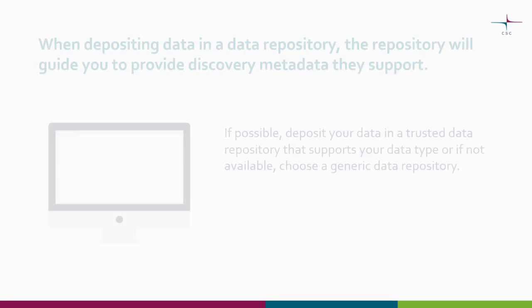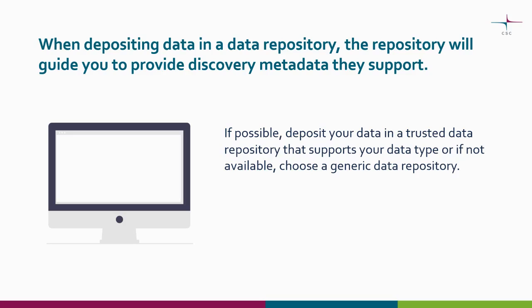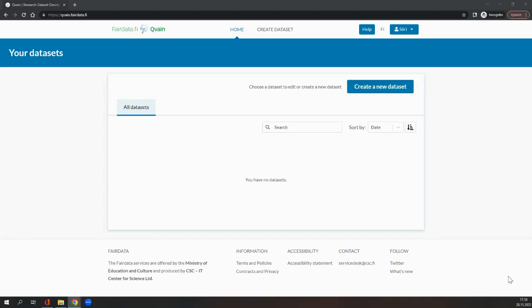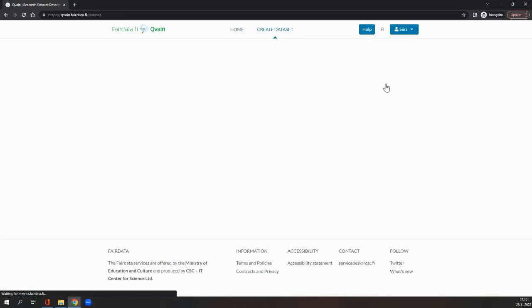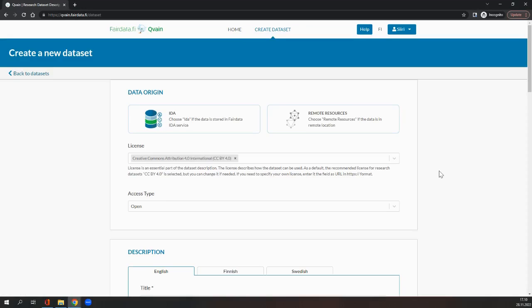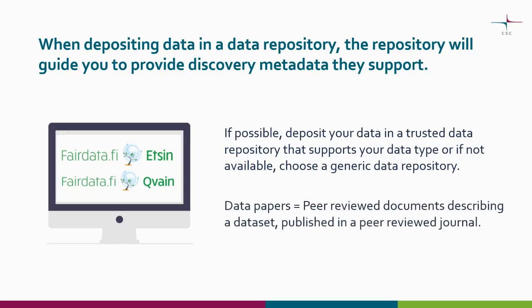When you publish your dataset in a data repository, preferably in a data type specific place, the repository guides you to provide the discovery metadata they support or provides it for you. You can also use generic or non-data-type-specific repositories. If you use the FAIR Data services for publishing data, you are guided to provide suitable discovery metadata by the Kuvaen tool, and once the description is ready, the information will be published in Etsin. You can also get familiar with data papers, which are peer-reviewed documents describing a dataset, published in a peer-reviewed journal.